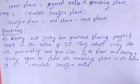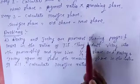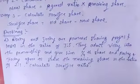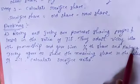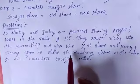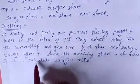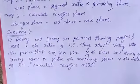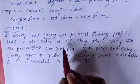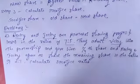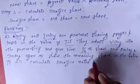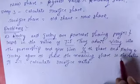We take the first problem on the calculation of sacrifice ratio. Rocky and Jockey are partners sharing profits and losses in the ratio of 7:5. They admit Vicky into the partnership and give him 1/4th share, and Rocky and Jockey agree to share the remaining share in the ratio of 2:1. Calculate the sacrifice ratio.